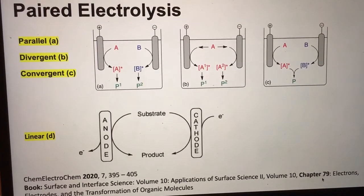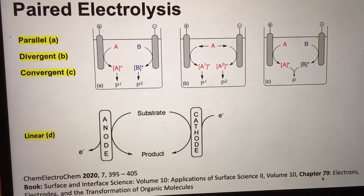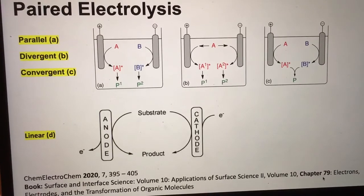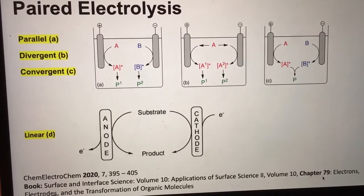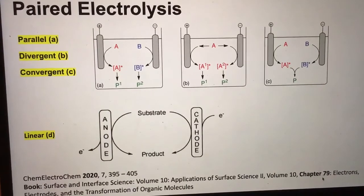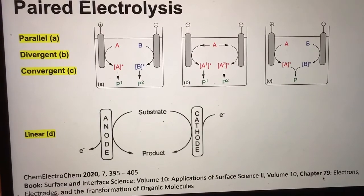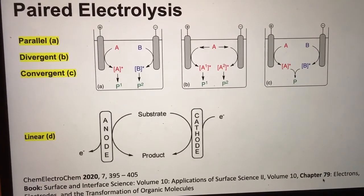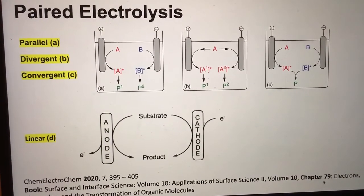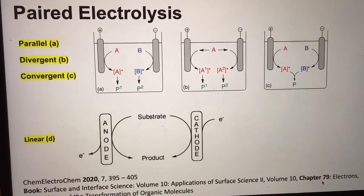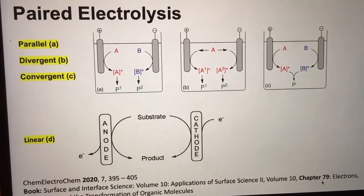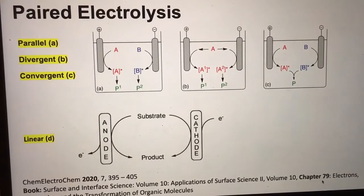These include parallel pair electrolysis, divergent electrolysis, convergent pair electrolysis, and linear pair electrolysis. All these types help in getting the benefit from both sides of the electrode and good oxidative and reductive products are achieved.